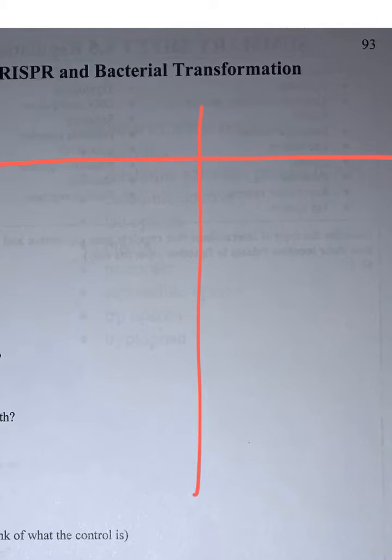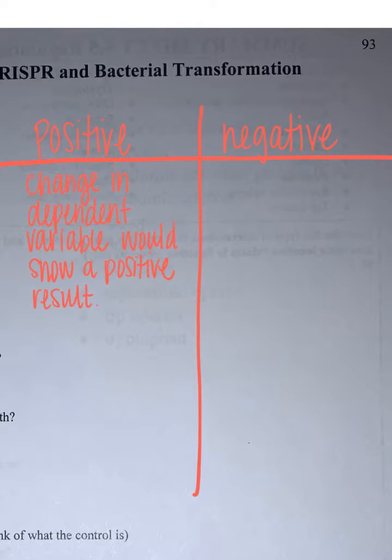In my t-chart, I'm going to go over the difference between positive control and negative control. A positive control is a control group where if you change the dependent variable, you're expected to see a positive response.